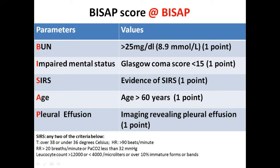To calculate the BISAP score we use five parameters, which can be remembered using the mnemonic BISAP itself: B stands for BUN, I is for Impaired mental status, S is for SIRS, A is for Age, and P is for Pleural effusion. If the patient has a BUN of more than 25 mg/dL (or 8.9 mmol/L), that is equivalent to one point. Similarly, presence of a Glasgow Coma Score of less than 15 is designated as one point, and fulfilling the evidence of SIRS is also designated one point.